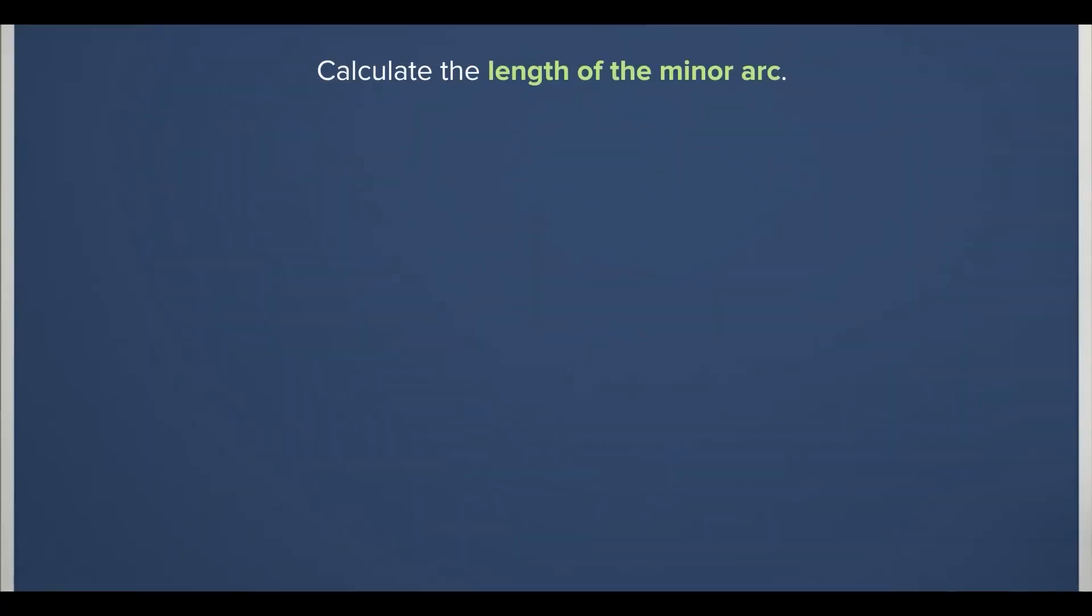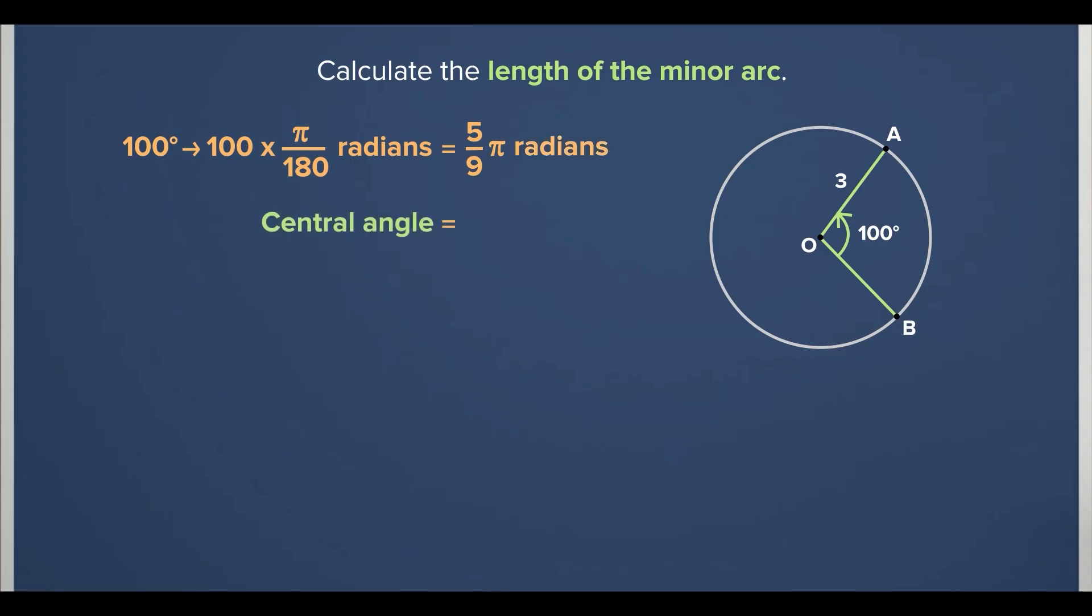Let's first look at the question in which we have to calculate the length of the minor arc. We know that central angle theta equal to 100 degrees converts to 100 times pi over 180 radians. Hence, we get theta equal to 5 over 9 times pi radians. And we know that theta is equal to the arc AB divided by the radius. In other words, the length of the minor arc AB will be r times theta, which is 3 times 5 over 9 times pi, and we get 5 over 3 times pi units.